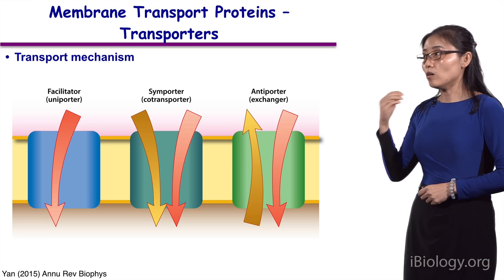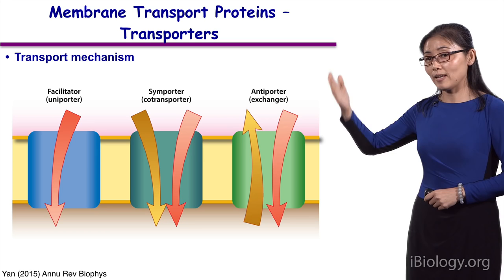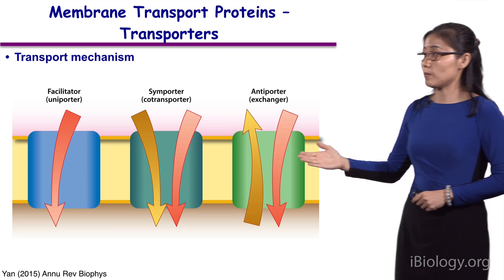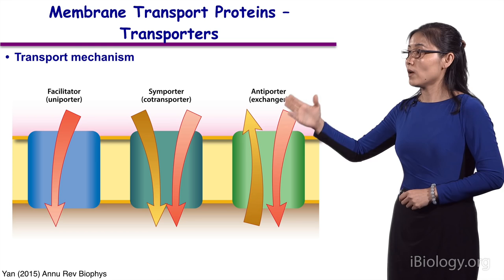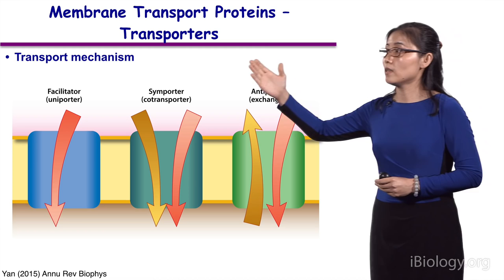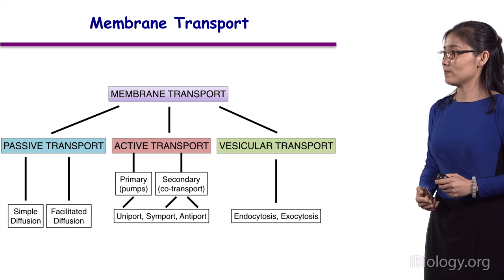For transporters, we can also classify them by the transport orientations of the substrates. For a facilitator, by catalyzing the diffusion of one type of substrate, it's called a uniporter. For active transporters — especially secondary active transporters — by definition they must transport at least two substrates. Depending on the orientations of these two or more substrates, they can be called either a symporter, if the two substrates go in the same direction, or an antiporter, if the two substrates go in opposite directions. So for transporters, they are uniporters, symporters, and antiporters.